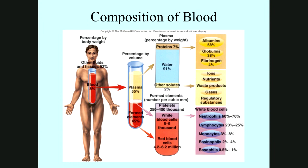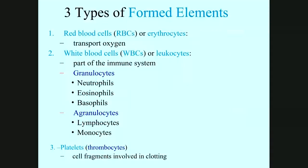The formed elements — forty-five percent of our blood — are made of three types of cells: the platelets, the white blood cells, and the red blood cells. The red blood cells are erythrocytes, and their major function is to transport oxygen. The white blood cells are leukocytes — remember that suffix '-cyte' means cell.